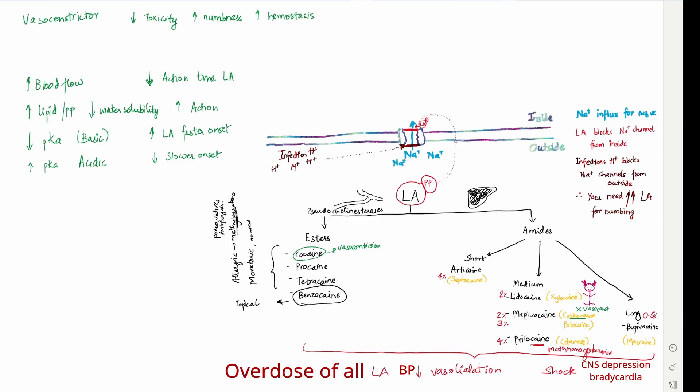Now, other important things which we need to remember in terms of local anesthetics is that for maximum LA without vasoconstrictor is 4.4 mg per kg and maximum LA with vasoconstrictor is 7 mg per kg. Again, with vasoconstrictor, it is more obviously because it increases the action time and duration of action.